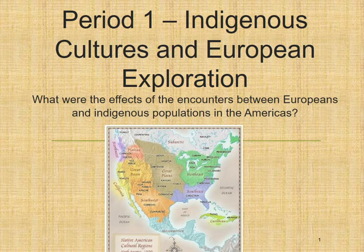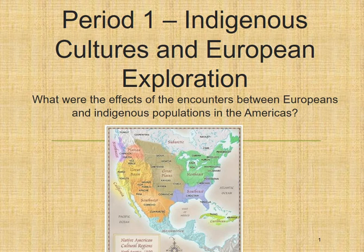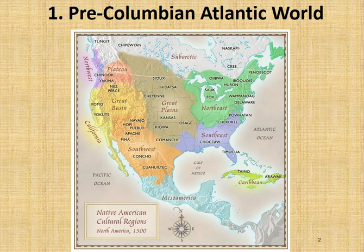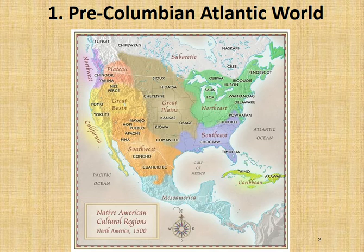Here is part 1 of the review for period 1. Our big themes are going to be, essentially, what were the effects of the encounters between Europeans and indigenous populations in the Americas. We're going to look at the pre-Columbian Atlantic world — not only pre-Columbian North America, but also pre-Columbian Europe, and then how they encountered each other.